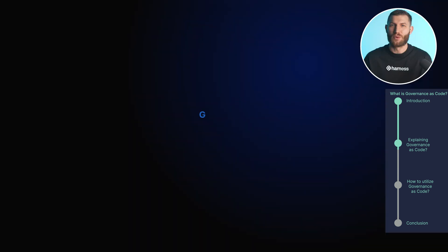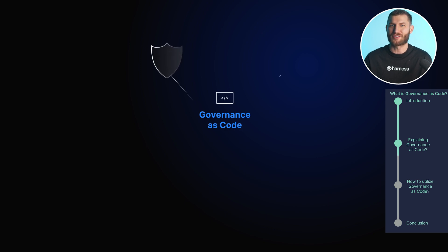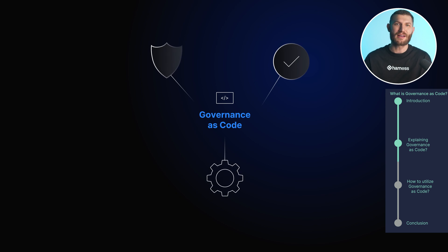At its core, governance as code involves writing policies in code, often using a declarative language, and automating error enforcement. Whether it's managing security, compliance, or operational procedures, governance as code allows you to define the rules once and automatically apply them across all environments.